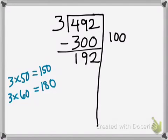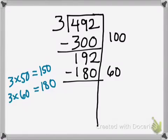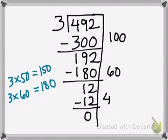180 is pretty close to 192, so that's the one I want to use. So if I do 60 groups of 3, 3 times 60, I know I've used up 180 of my dividend. But I still have 12 left. 12 is a lot easier — I know that 3 times 4 will get me 12, and I've used up all of my dividend. I've subtracted all of the parts out. Off to the side is where we've kept track of all the partial quotients: 100, 60, and 4. So that'll get me 164.